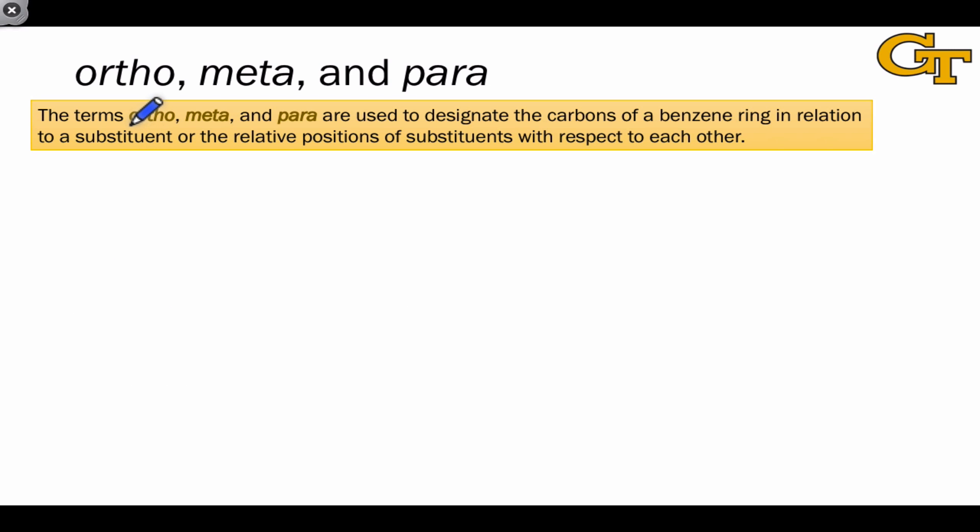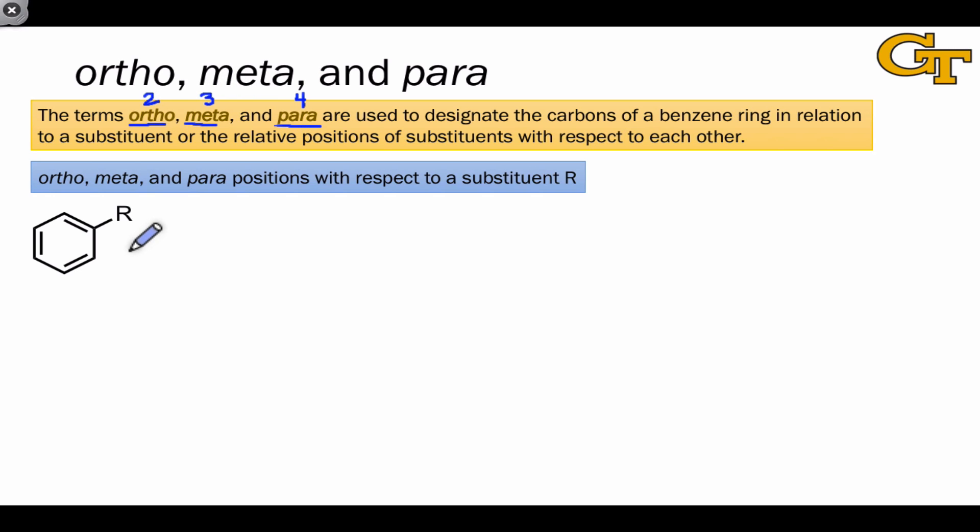The terms we use for this situation are ortho, meta, and para. Ortho essentially refers to the two position relative to a substituent. Meta to the three position and para to the four position. So for instance, in this hypothetical generic substituted benzene, there are two ortho positions that I'm highlighting in blue, and these are both one carbon away from the carbon bearing the substituent. There are also two meta positions, located two carbons away from where the substituent is located. And finally, there's one para position on the opposite side of the benzene from the R group, and this is located at the four position.